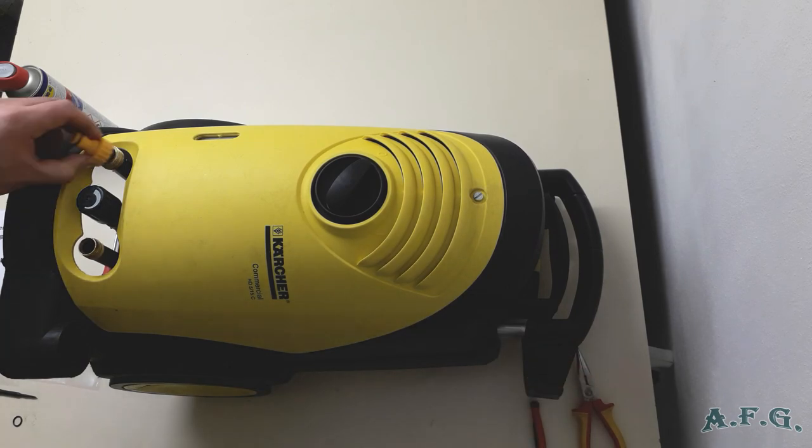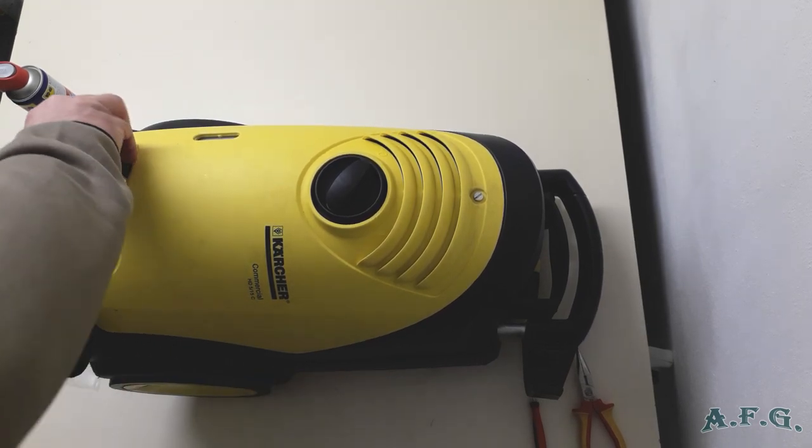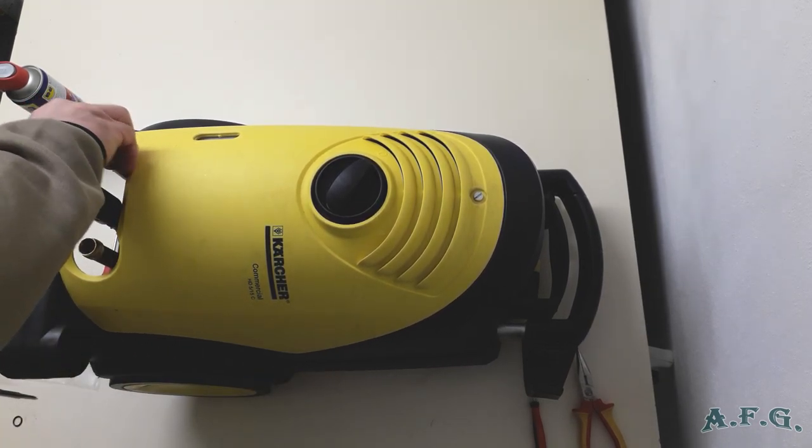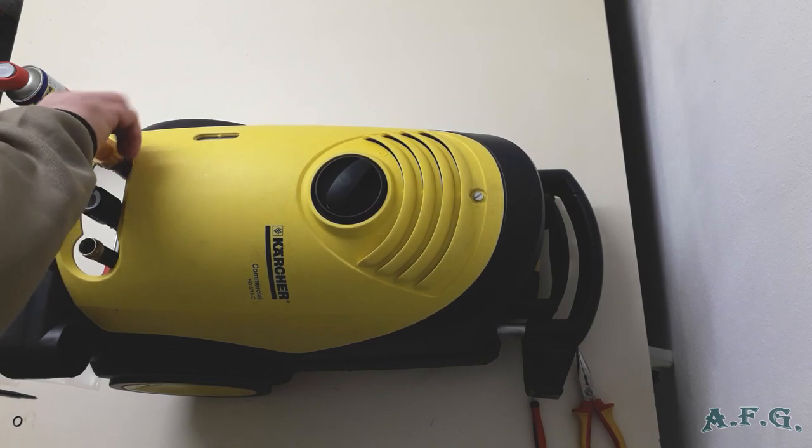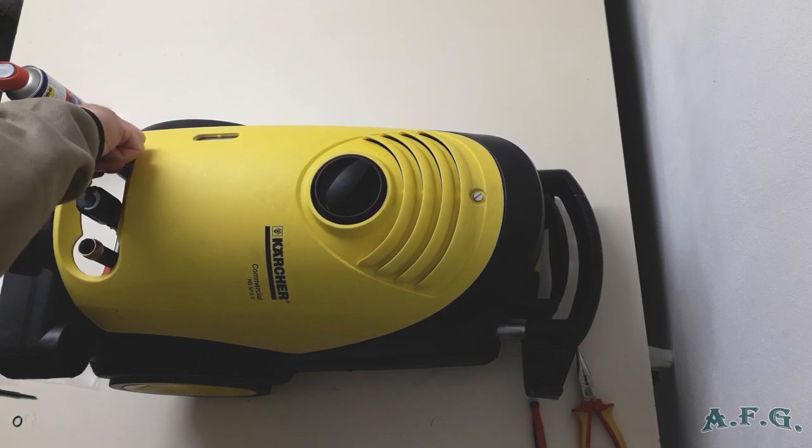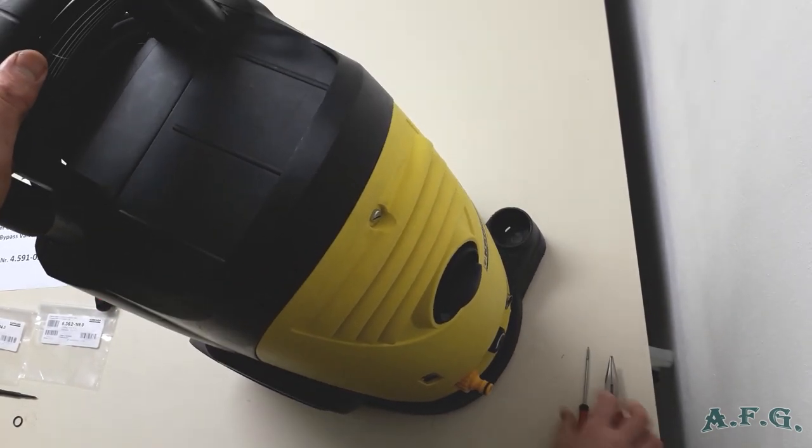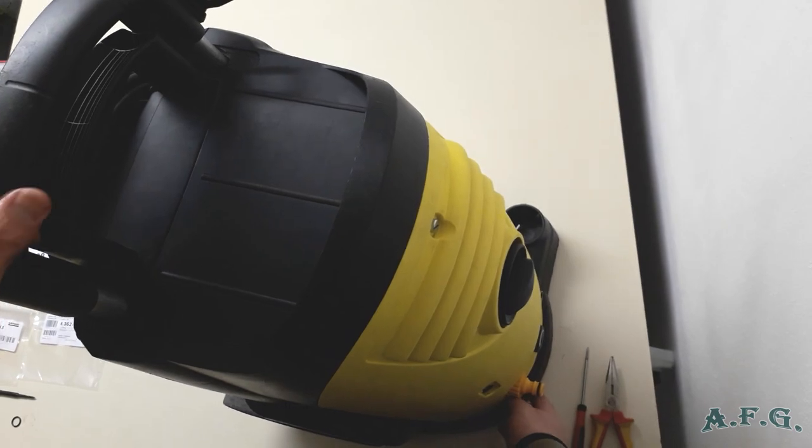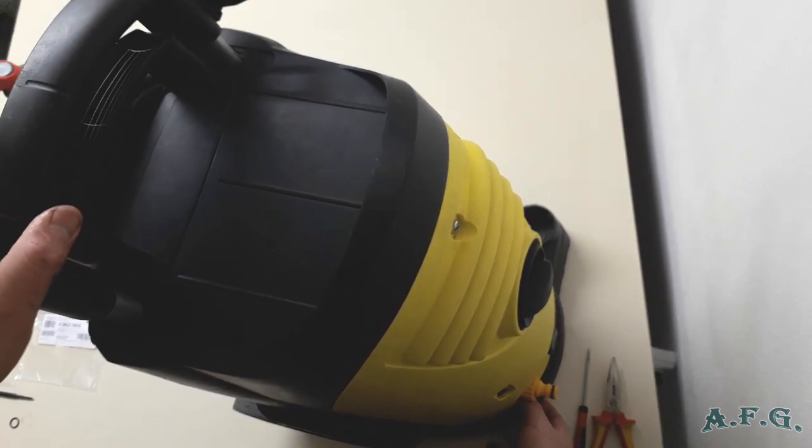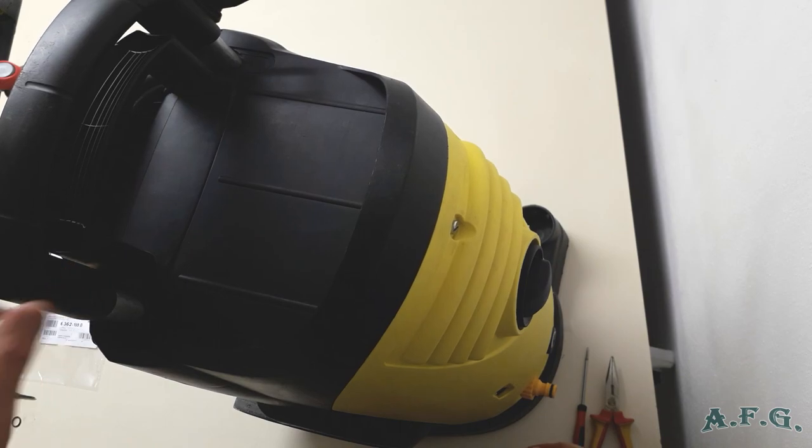One more thing. We can put back this thing with the filter. And position it in the upright position. And we have our power washer high pressure cleaner ready for work, fixed in 100% condition.